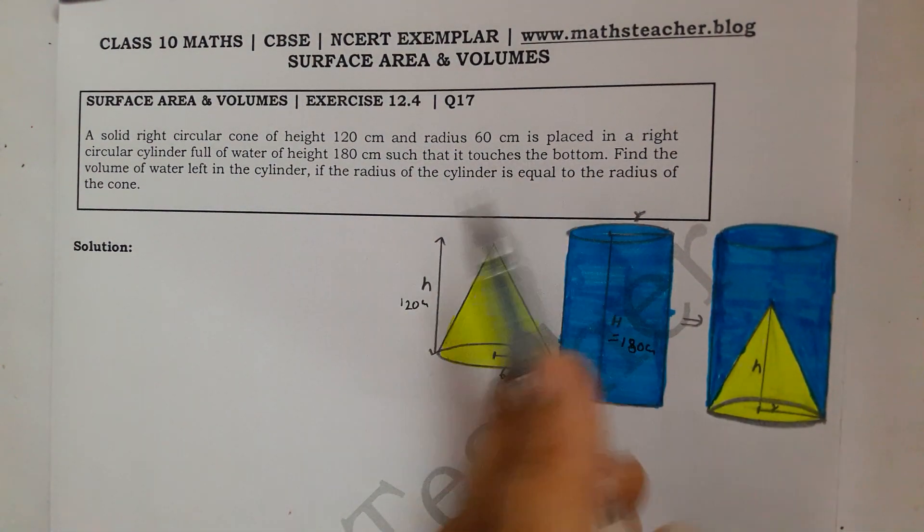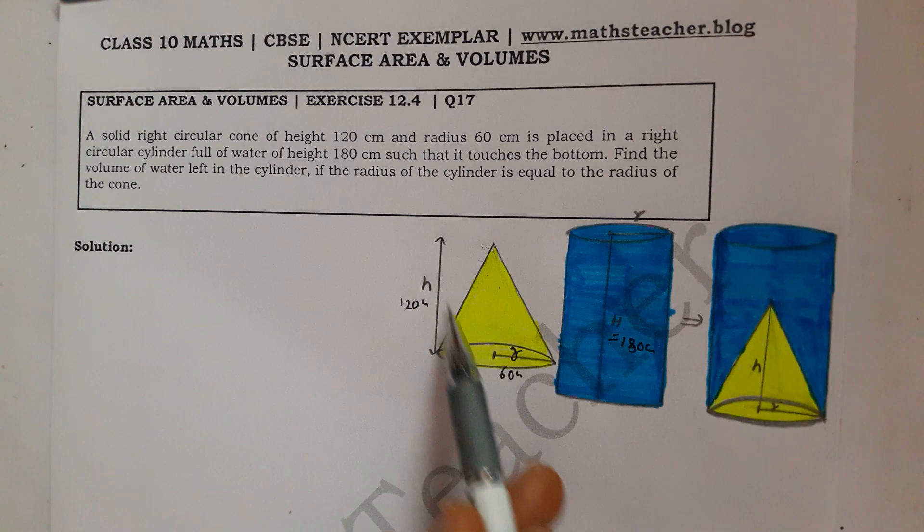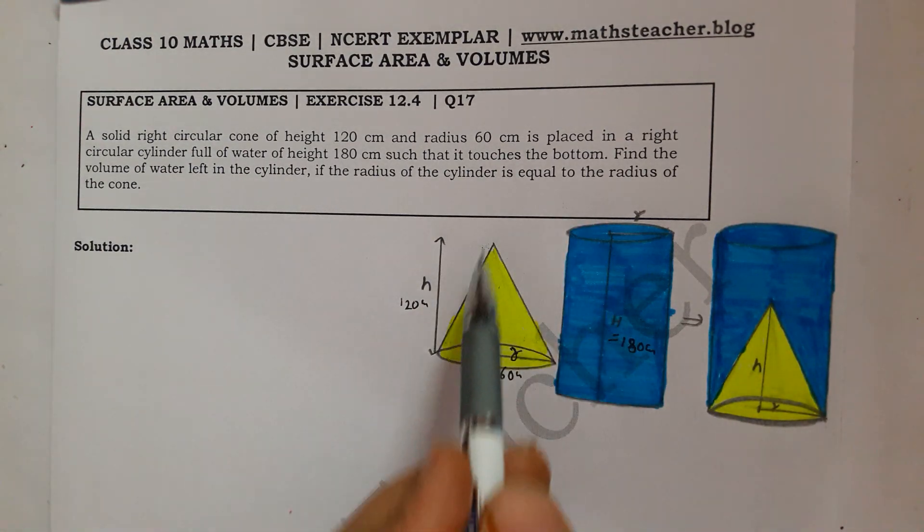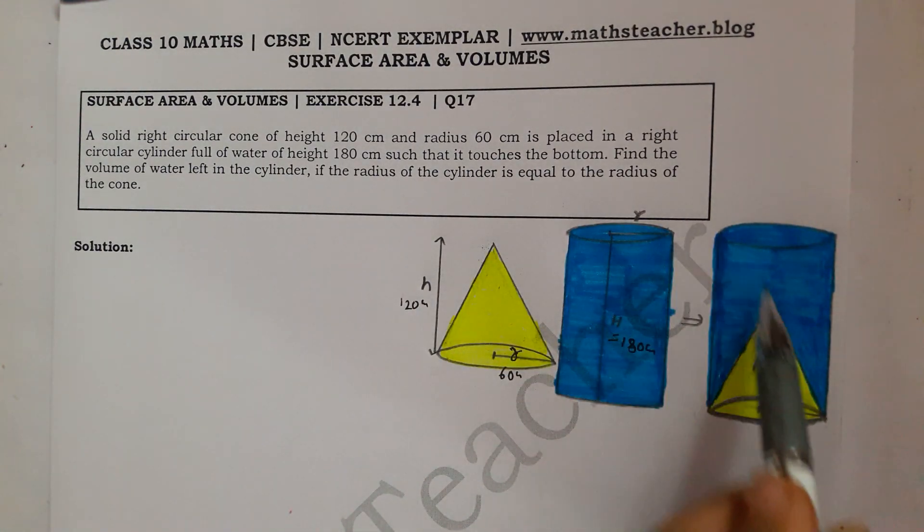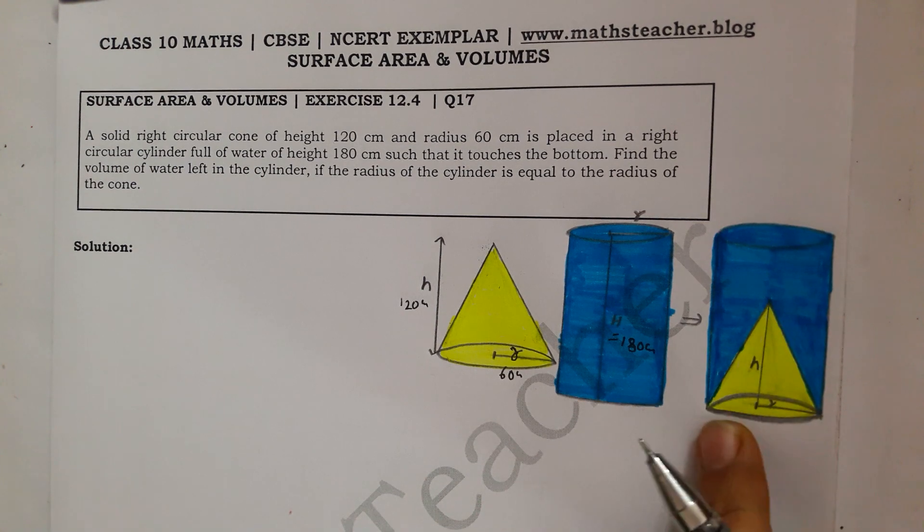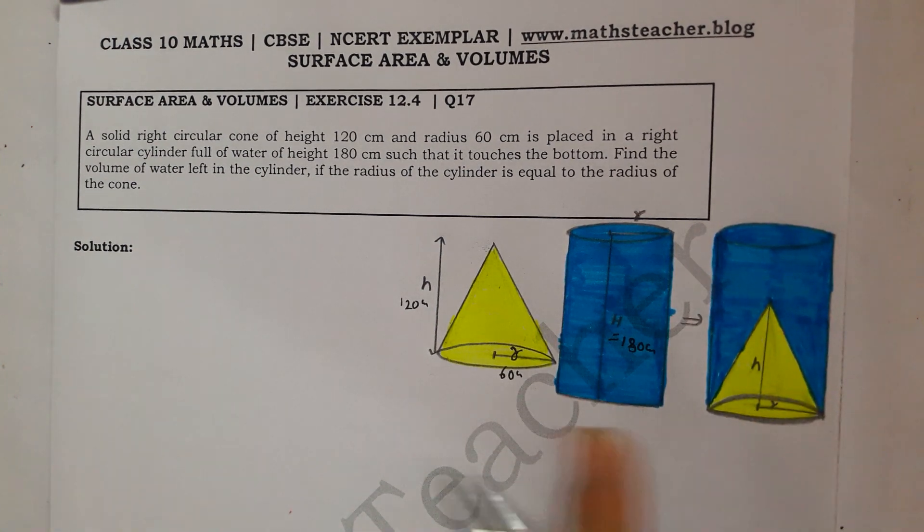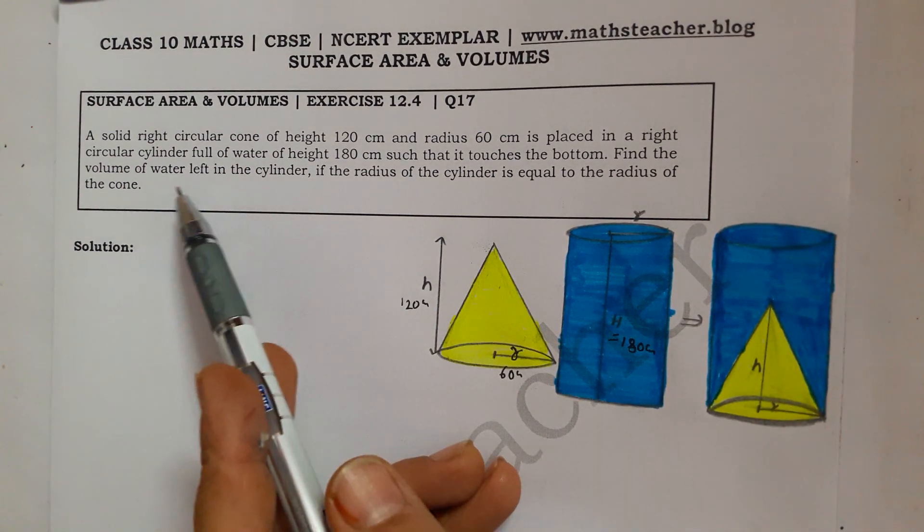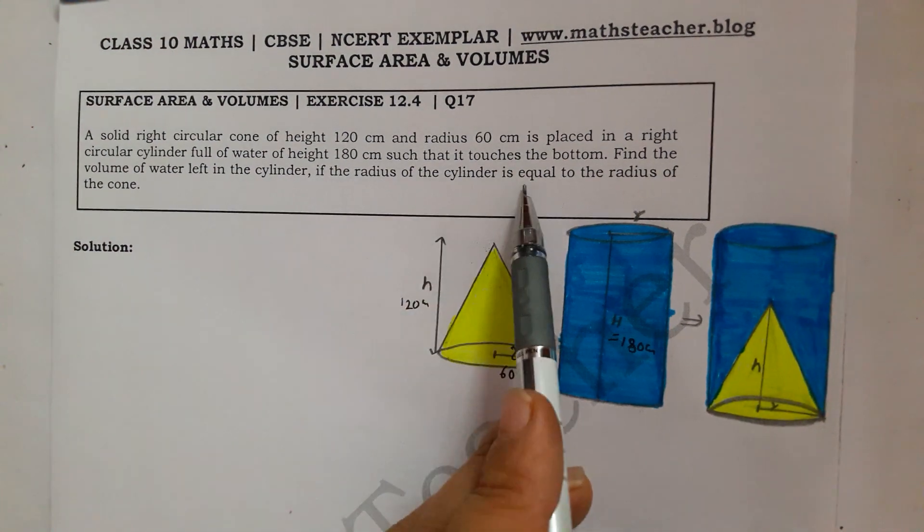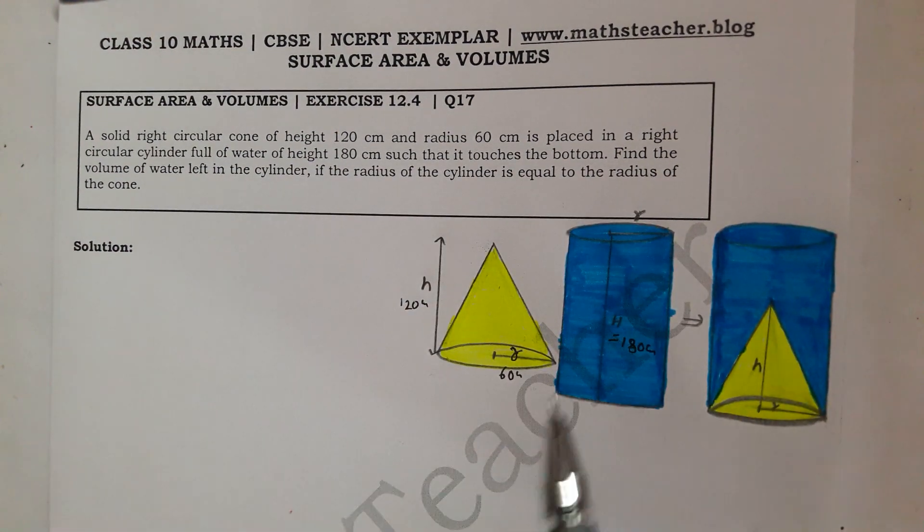The cone touches the bottom. This cone is kept inside the cylinder and kept at the bottom so it touches the bottom. Find the volume of the water left in the cylinder if the radius of the cylinder is equal to the radius of the cone.